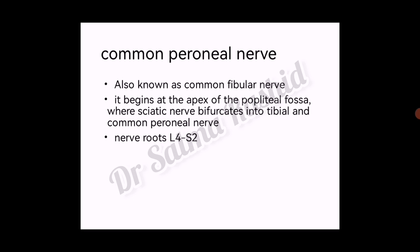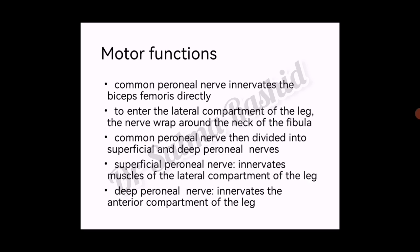The common peroneal nerve is also known as the common fibular nerve. It begins at the apex of the popliteal fossa where the sciatic nerve bifurcates into the tibial and common peroneal nerve. Its nerve root is L4 to S2. For motor function, the common peroneal nerve innervates the biceps femoris, then wraps around the neck of the fibula to enter the lateral compartment of the leg. The leg has three compartments: posterior, lateral, and anterior. The common peroneal nerve divides into superficial and deep peroneal nerves. The superficial peroneal nerve innervates muscles of the lateral compartment; the deep peroneal nerve innervates the anterior compartment.